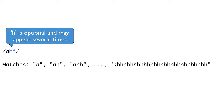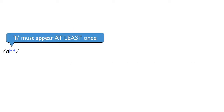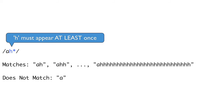For example, the string A-H* would match the letter A, A-H, A-H-H, and so on. The plus is just like the star, but the preceding character must occur at least once. So A-H+ would match A-H, A-H-H, and A-H-H-H, but not just the single letter A.